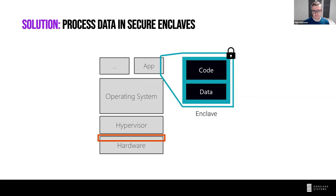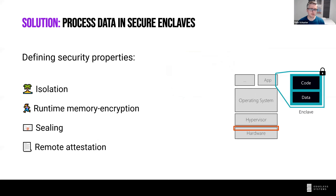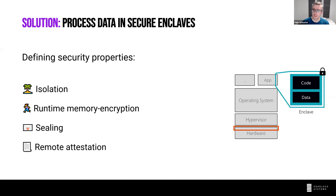Enclaves have four great security features. The first is isolation: your enclave is strongly isolated from the rest of the system and the CPU enforces that. The CPU prevents any system component — including the operating system, the hypervisor, or other hardware — from interacting with the enclave in most ways. It doesn't allow the OS to read the enclave's memory, though it still allows the OS to manage the enclave — start it, stop it, but not look inside or interfere with its execution.